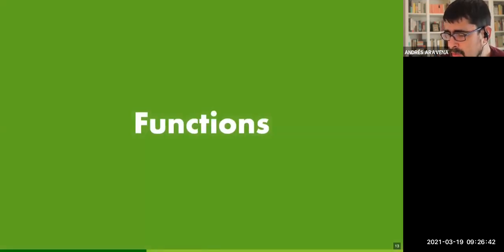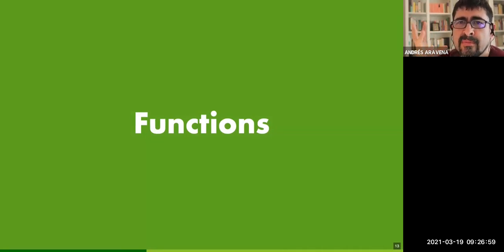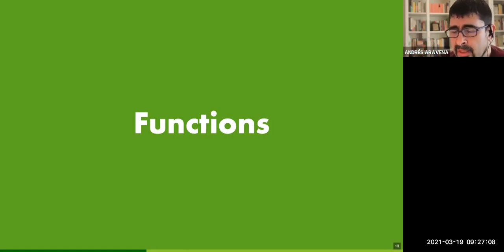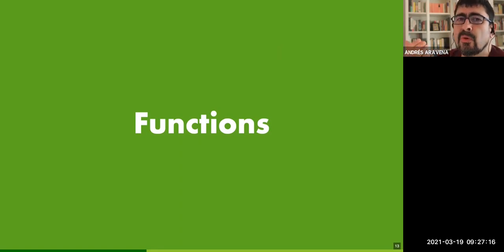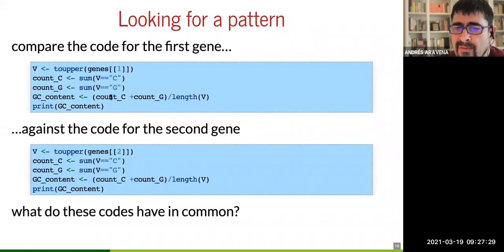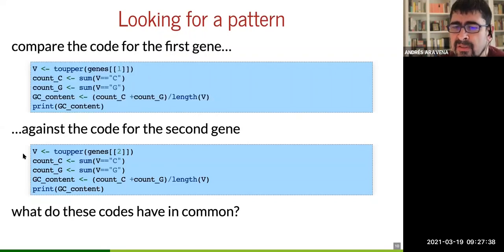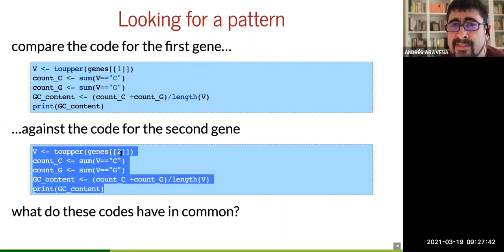Let's talk about functions — this is one way we do abstraction. It can look contradictory because we said we decompose — that's analysis — and now we synthesize, putting steps back together in a more general way. Here we have code that can calculate the GC content of the first gene only, and here code for only the second gene — but this one can calculate the GC content for any gene.